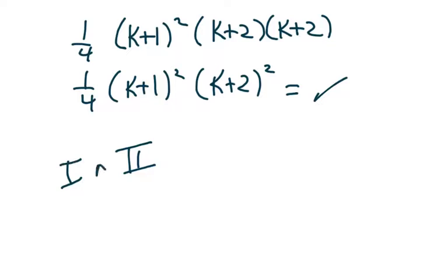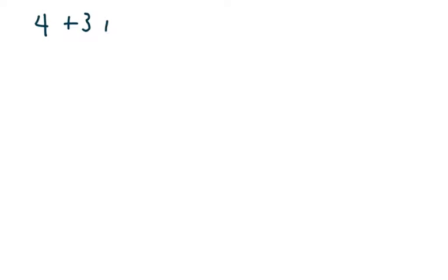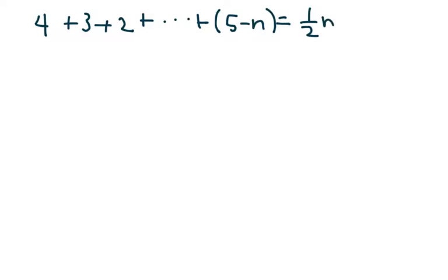The next one we're going to do is different. We're going to work with: four plus three plus two plus dot dot dot plus (5 minus n) equals one-half n times (9 minus n).